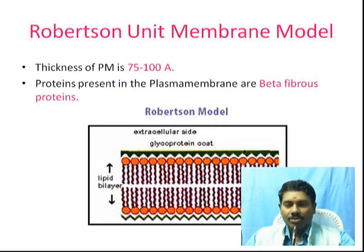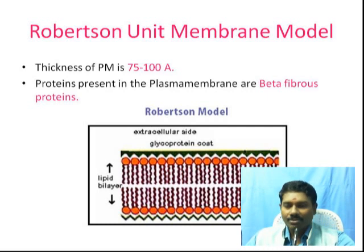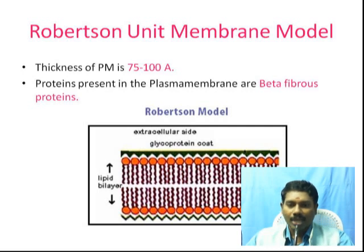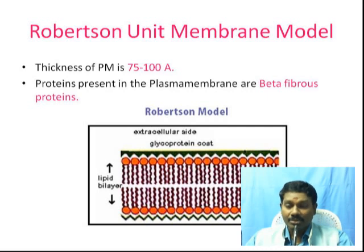The Robertson Unit Membrane Model addresses the thickness of the Plasma Membrane. The plasma membrane surrounds the nucleus and cytoplasm. The outer surrounding is a Plasma Membrane. Especially, the plant cell has a cell wall, but the animal cell does not have one.